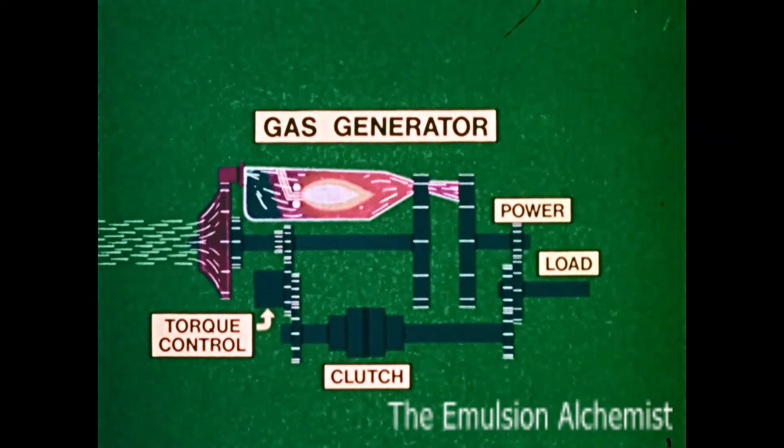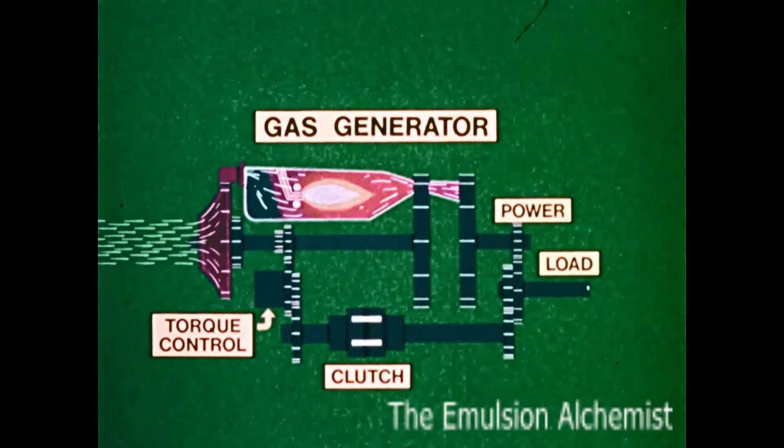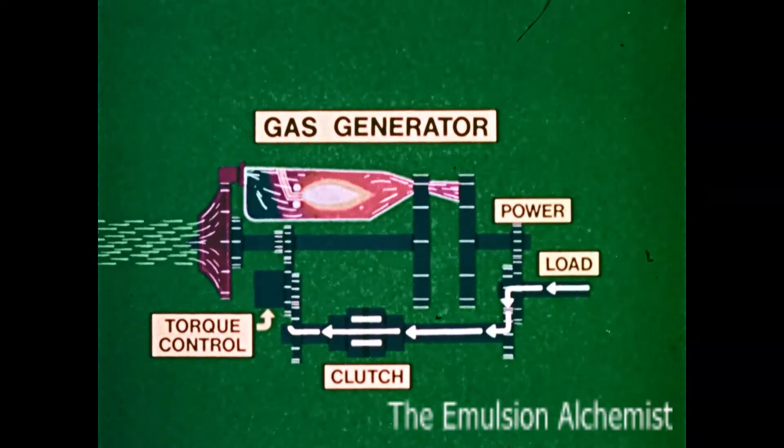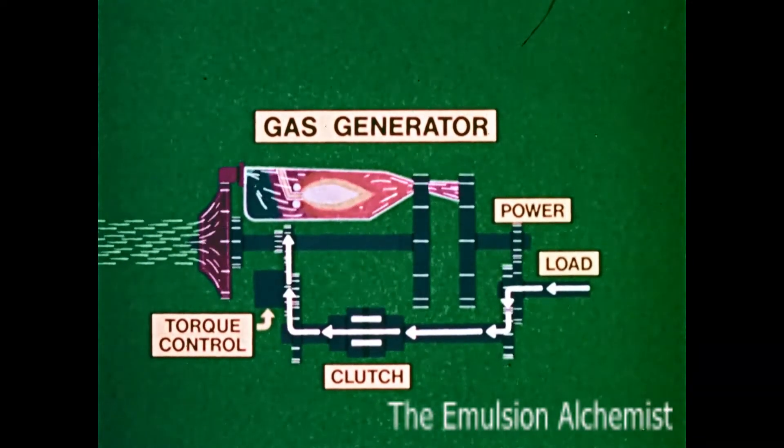In the braking action, the clutch is fully engaged, so that the energy that the vehicle puts into the shaft is absorbed by the gas generator system.